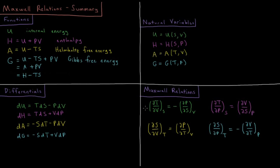For our Helmholtz energy, we get dS/dV at constant T equals dP/dT at constant V. And finally, for the Gibbs energy, we get dS/dP at constant T equals minus dV/dT at constant P.